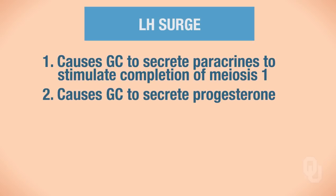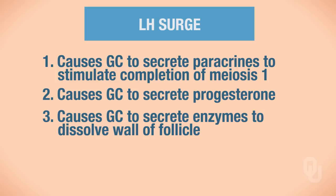Third, the LH surge is going to cause the granulosa cells to secrete enzymes to dissolve the follicle wall. If you want the Graafian follicle to rupture for ovulation to take place, you need enzymes to dissolve the wall so that the Graafian follicle can rupture and ovulation can occur.